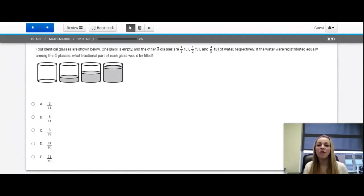Question number 32. Four identical glasses are shown below. One glass is empty and the other three glasses are one fourth full, one half full, and four fifths full of water respectively. If the water are redistributed equally among the four glasses, what fractional parts of each glass would be filled?